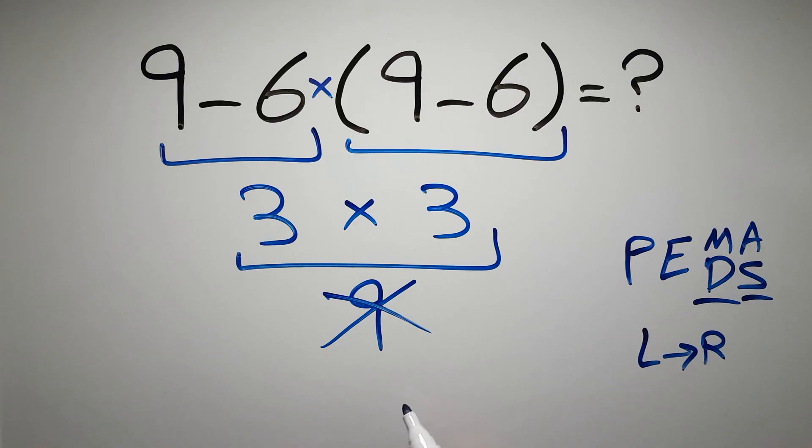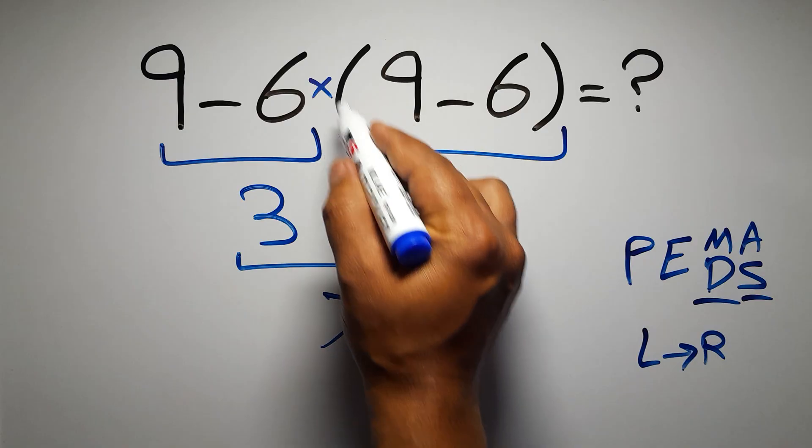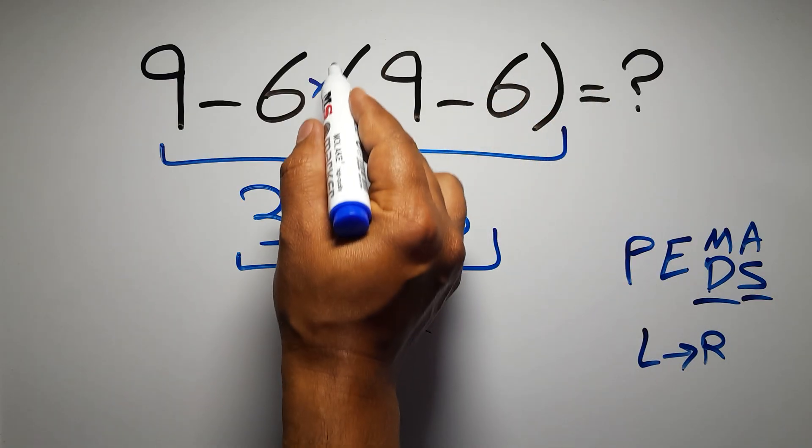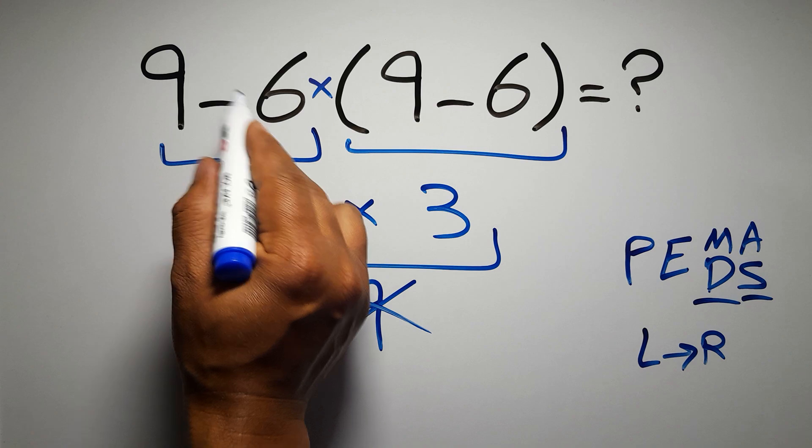Inside these parentheses we have one subtraction. According to PEMDAS, first we have to do this parentheses, then this multiplication, and finally this subtraction. If we do this subtraction before this multiplication or these parentheses, it is wrong.